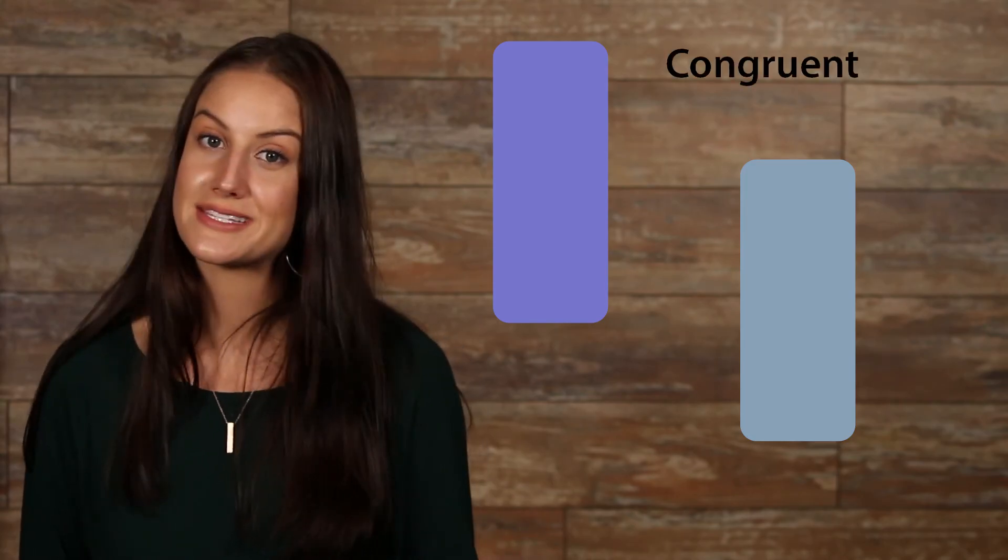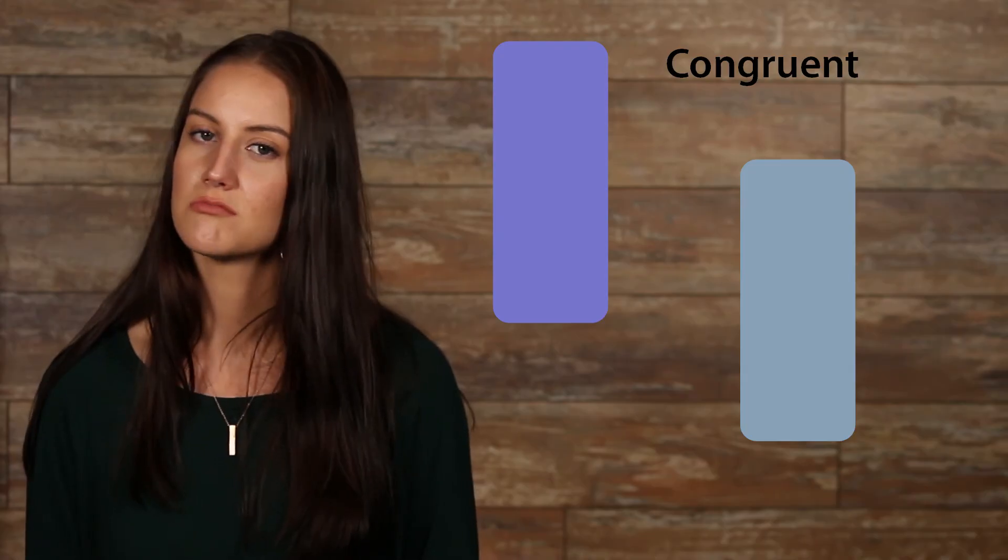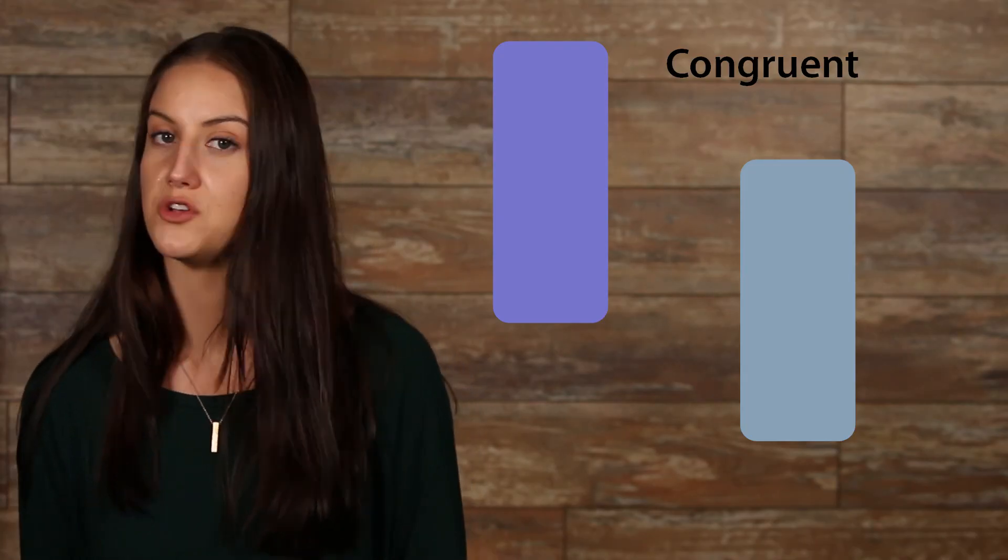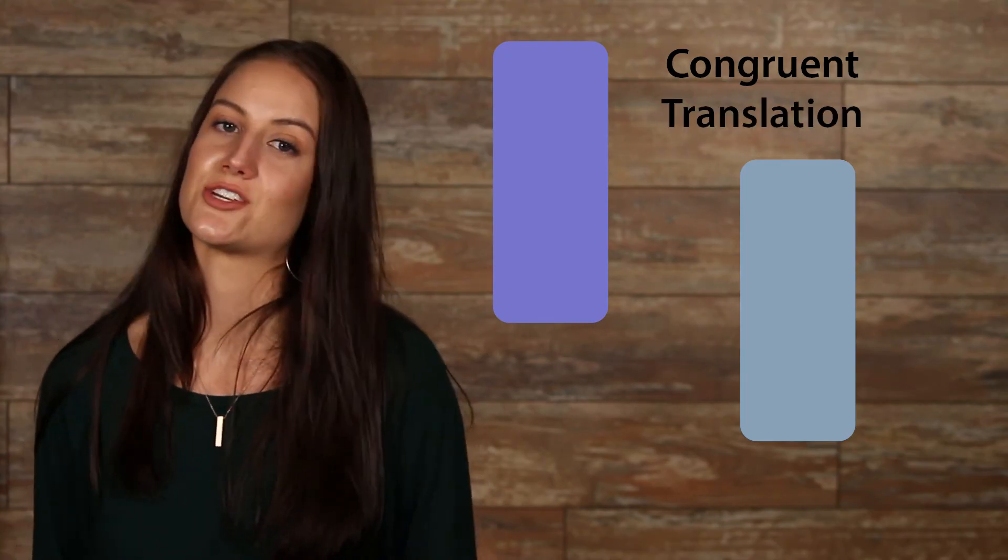Okay, last one. Are these two shapes congruent? Yeah, they are identical in shape and size, but what type of movement has been made? Was it flipped like the last one? No, it's not a reflection. Has it been turned or rotated? No, so it's not a rotation. Has it been slid? Yes, so we know that this is a translation.